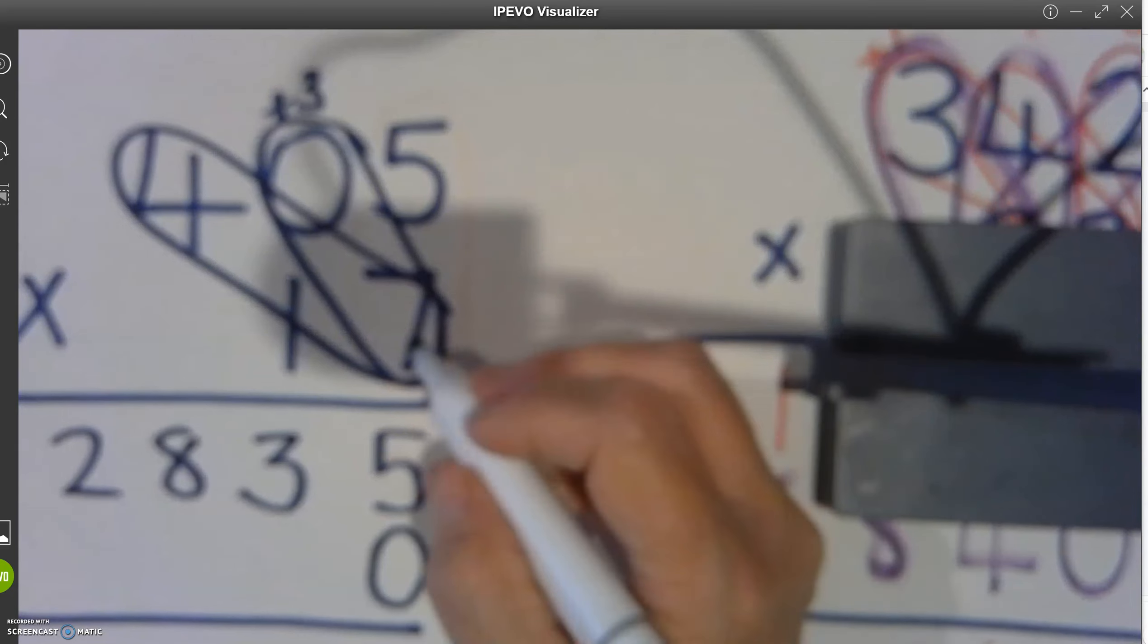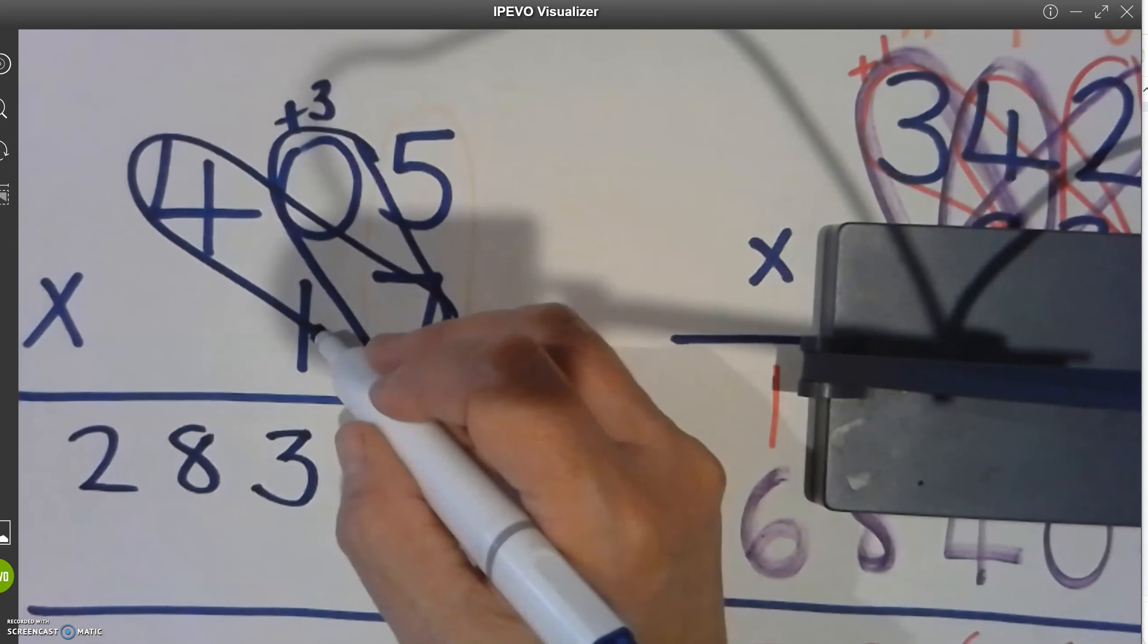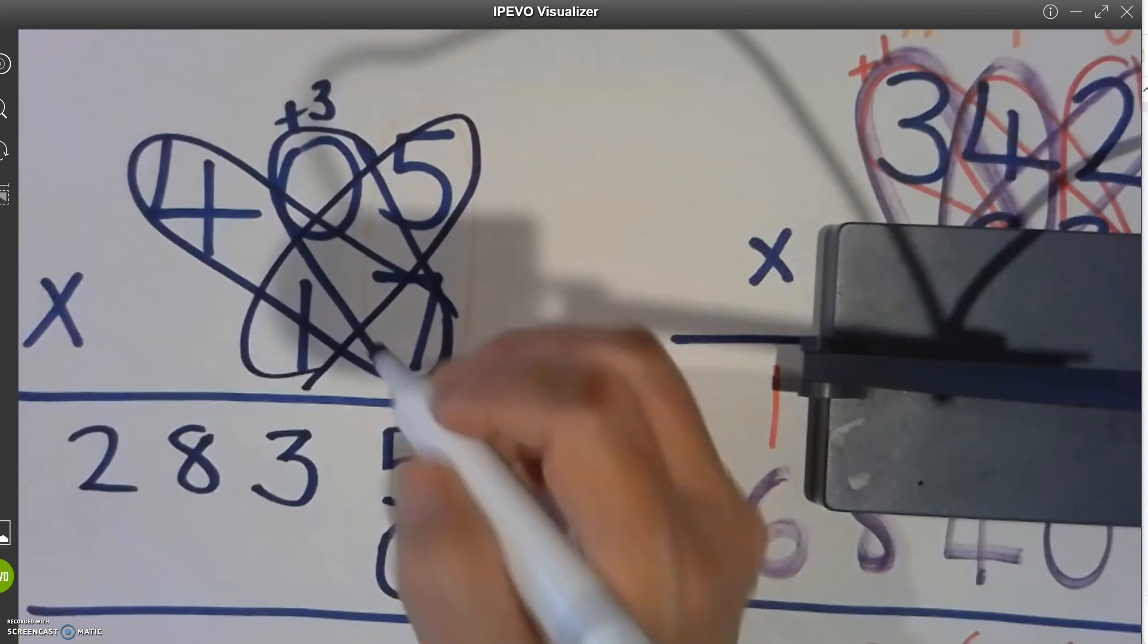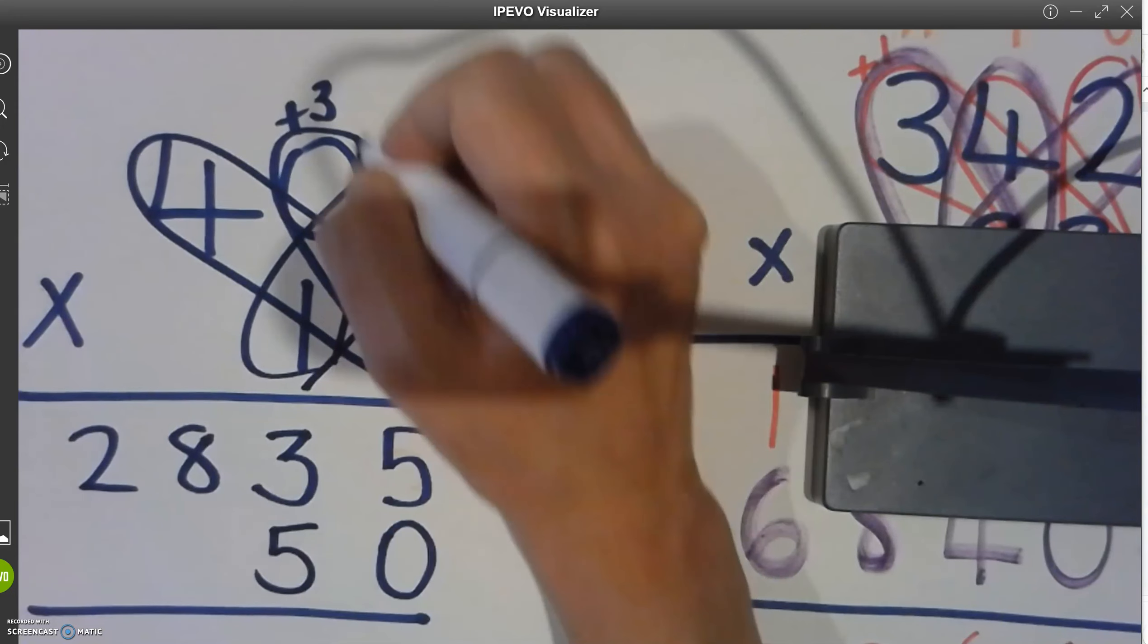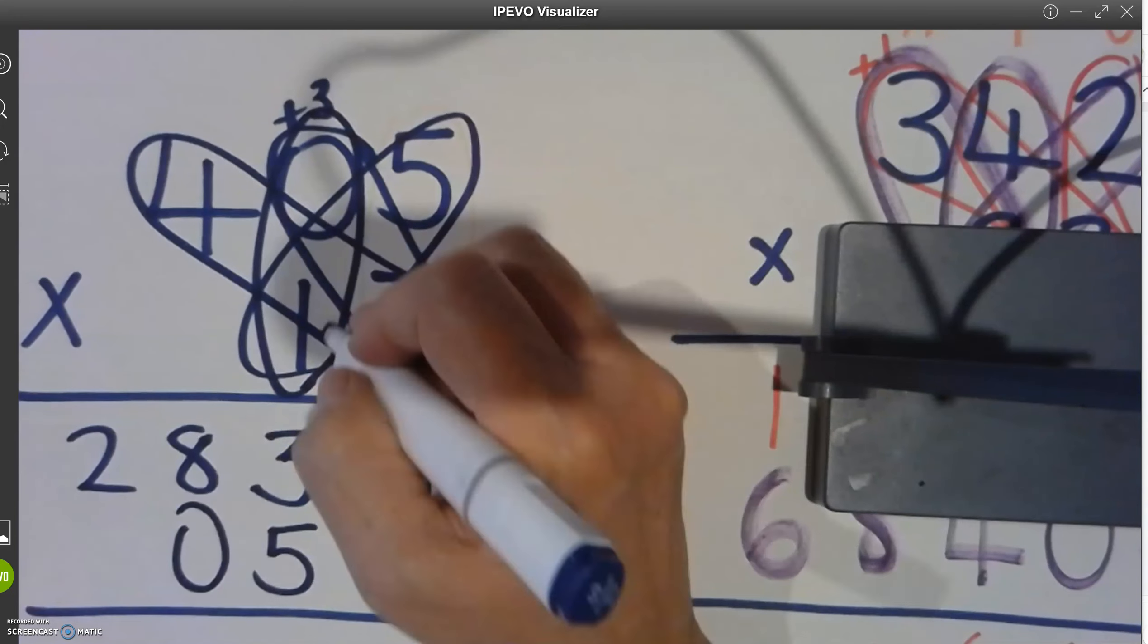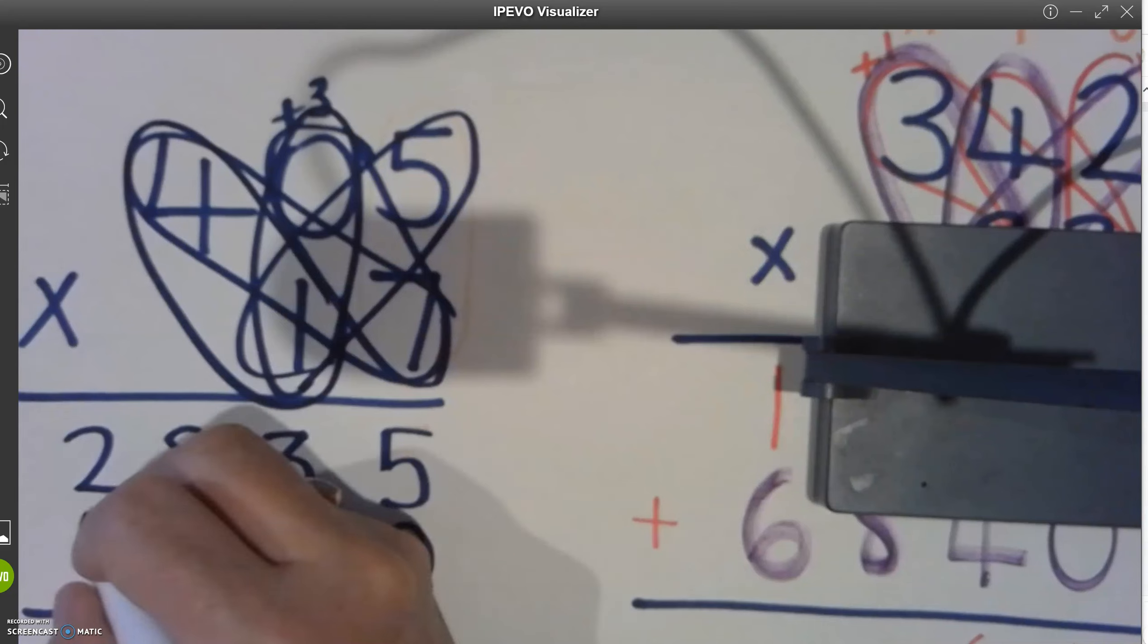Magic zero as we're going into the tens now. And we've got a very easy one. Five, zero. Four times one is four.